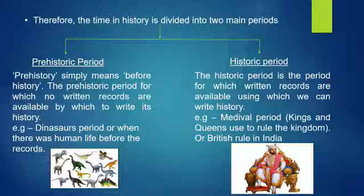The historic period is the period for which written records are available, using which we can write history. For example, the medieval period when kings and queens used to rule kingdoms. You have already learned about Shivaji Maharaj in 4th standard, so you know what things were carried out by him, why it was carried out, and how it was useful for the people of his kingdom. Similarly, you know about British rule in India.